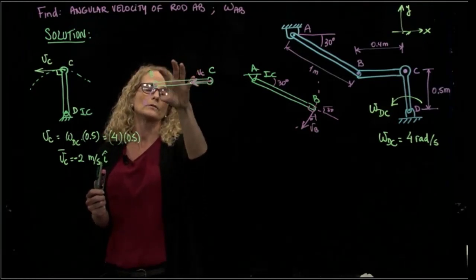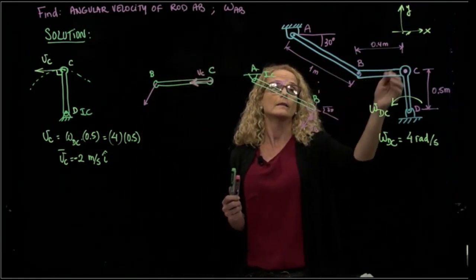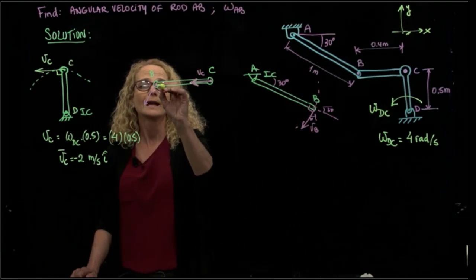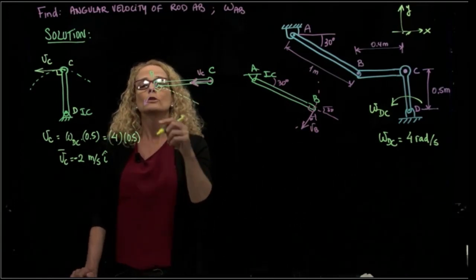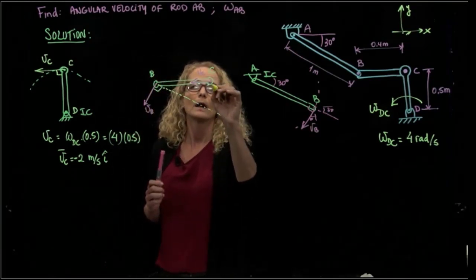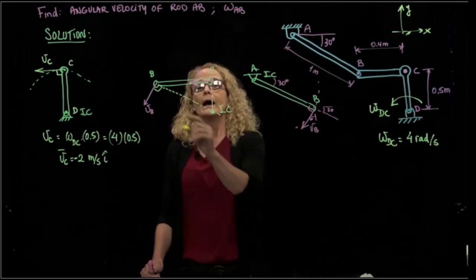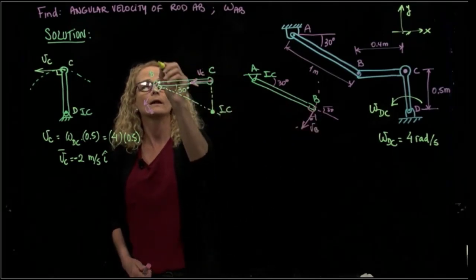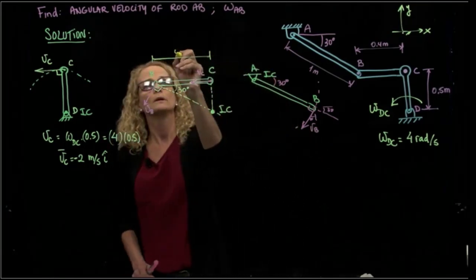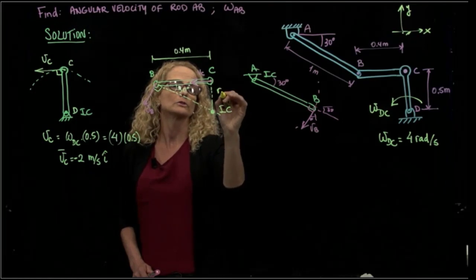We can find the instant center of rotation of bar BC, because if we find it, we will be able to find the angular velocity of BC and then the angular velocity of AB. The instant center of rotation must be perpendicular to each of the velocities of the body. Knowing the velocity of C and the velocity direction of B, the instant center of rotation is located at their intersection. I can define position vector RC from the instant center to C, and RB from the instant center to B.